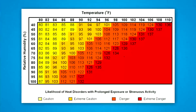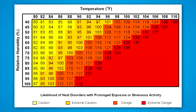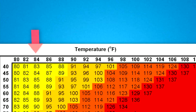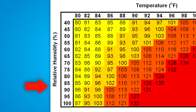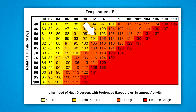Now here's how to use the heat index chart. First, you want to read across the top of the chart and locate the environmental temperature. Down the left side of the chart, you want to locate the relative humidity. Follow across and down to find the apparent temperature.